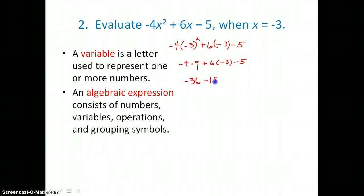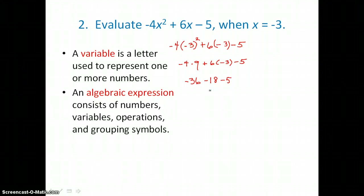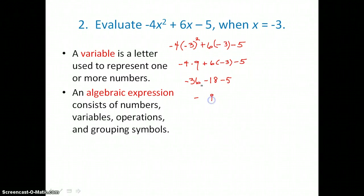We have minus 5 at the end. Our last step is to add and subtract working left to right. We're adding three negative values, so we get a total that is negative: negative 36, negative 18, and negative 5 gives us negative 59 altogether.